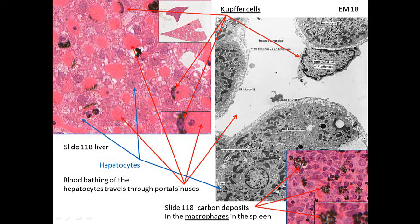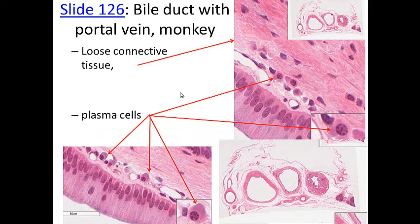Macrophages are everywhere. In the liver they are called Kupffer cells — here you can see where they took up carbon. This electron micrograph shows a Kupffer cell, which may be an endothelial cell in position. You can also see where carbon has been picked up by macrophages in the spleen. In the liver, Kupffer cells are located adjacent to the sinuses and the blood coming through, where they help clean the blood.